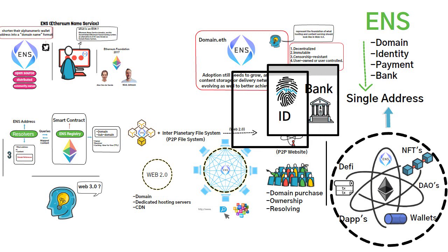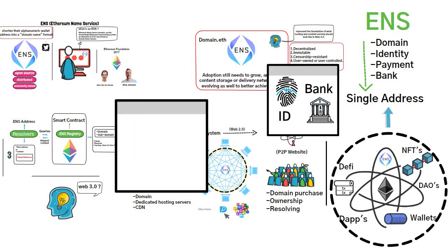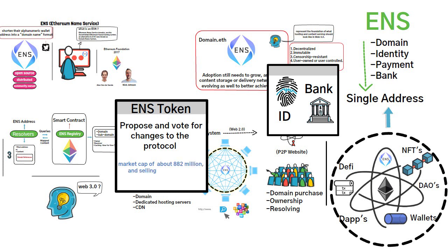Furthermore, ENS has a native token called the ENS token that governs the Ethereum Name Service. The ENS token will be used to propose and vote for changes to the protocol. It currently has a market cap of about 882 million dollars, selling at a price of about 40 US dollars. Will ENS become one of the most important components to change the way we interact with the web? We can't conclude for now, but the early signs are impressive.